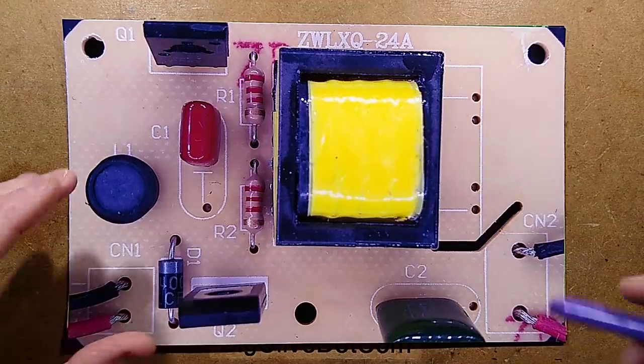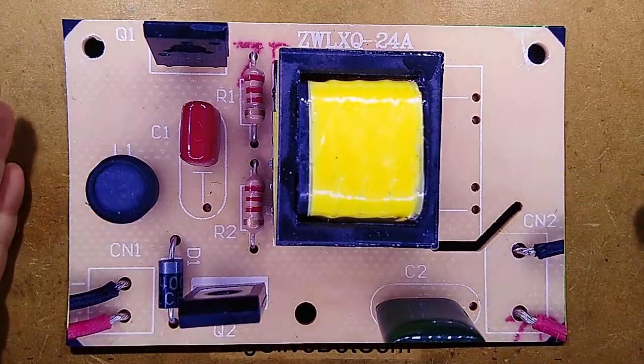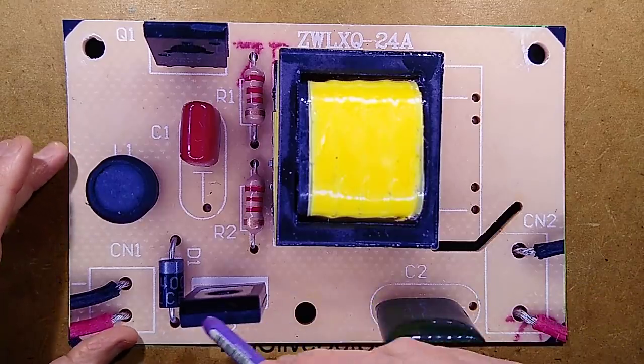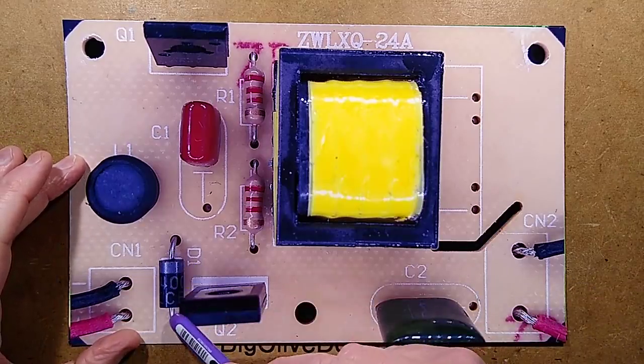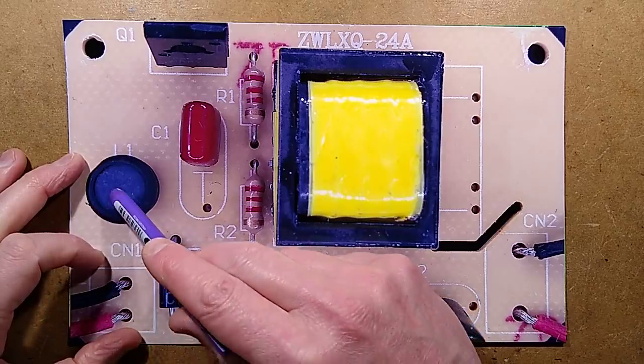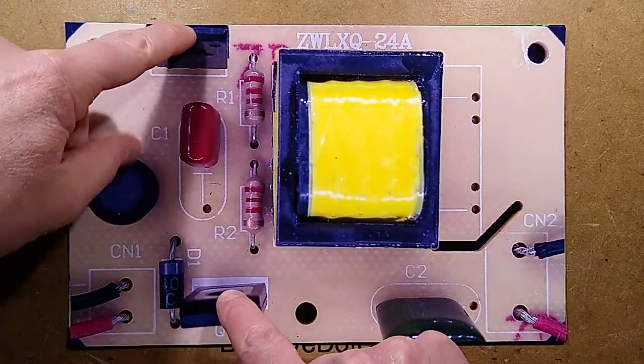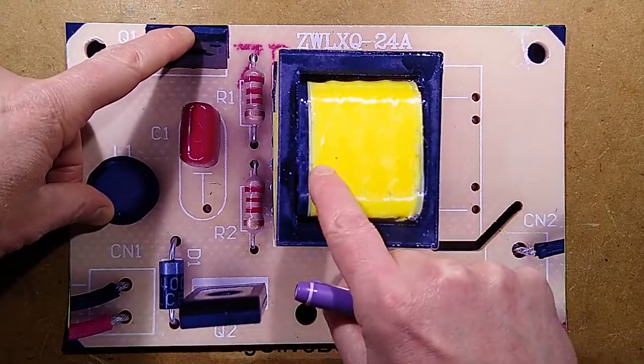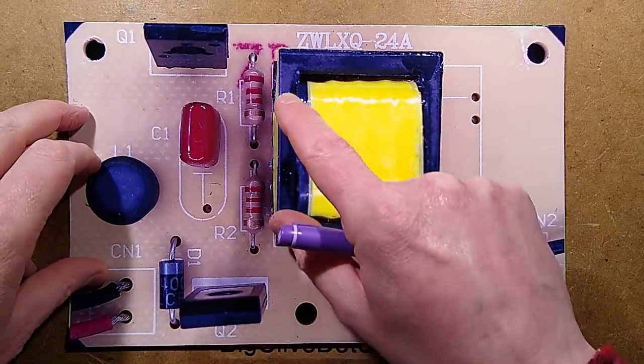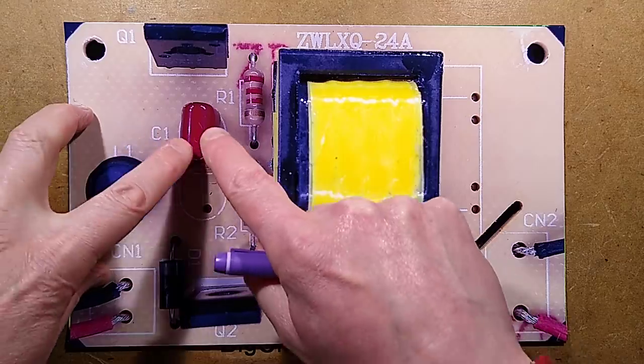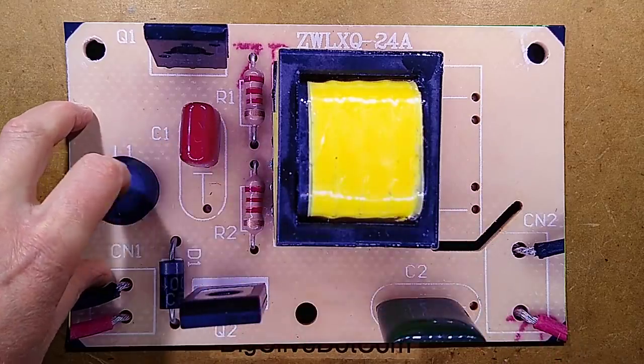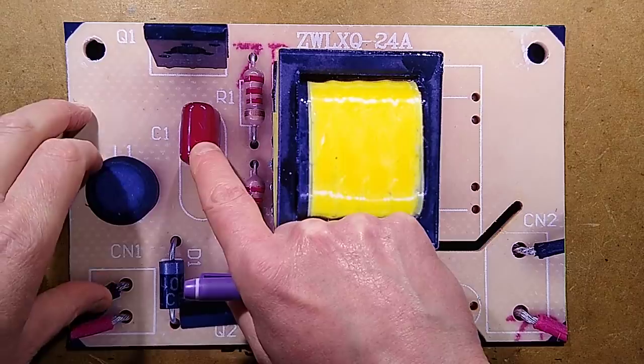Here's the circuit board - this is the component side, it's a single-sided board. We have an input polarity protection diode which goes to an inductor and then feeds the rest of the circuitry. We've got the two transistors which basically push-pull a primary of this transformer, and there's two feedback resistors.